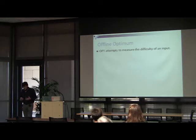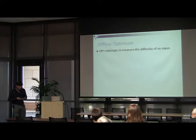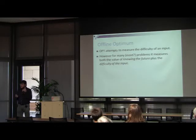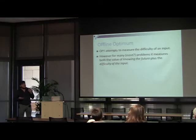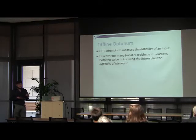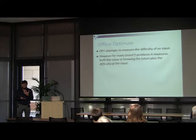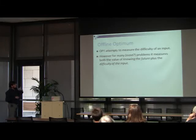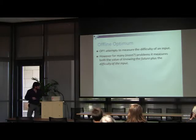If you think about it, what offline optimum is trying to do is measure how easy or how hard the input was, but the problem is that it's not a very good measure of that. For most problems, the offline optimum measures actually two things: it measures how hard the input was, but also how much it would help you to know the future. So the input could be really hard, but if you know the future it becomes easy. We're really combining two different numbers which have different units into one thing — the performance of the offline optimum. We would like to know which inputs are easier and in those inputs we want our online algorithm to do well, and which inputs are hard. But offline optimum is not exactly capturing that.